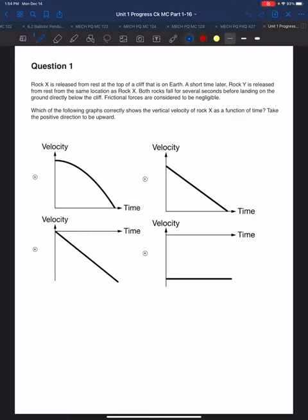In this question, we have rock X released from a cliff, and then a little bit later, rock Y is released. We are told that they fall for several seconds before they hit the ground. The frictional forces are considered to be negligible.